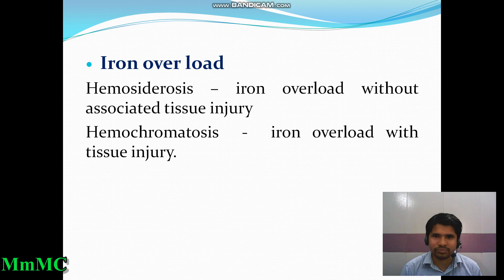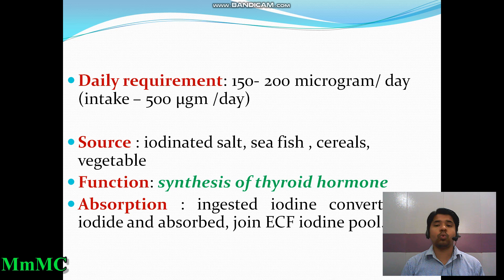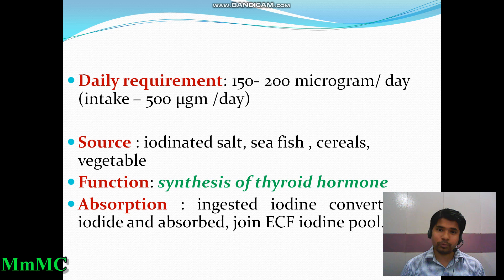Now we discuss iodine. Body iodine content is 45 to 50 milligrams. Distribution is mainly in the thyroid gland (10 to 15 mg), muscle, and other tissues. Daily requirement is 150 micrograms per day. Sources include iodinated salt, sea fish, cereals, and vegetables. The main function of iodine is synthesis of thyroid hormones — triiodothyronine (T3) and tetraiodothyronine (T4).